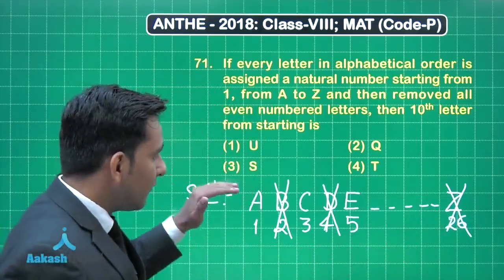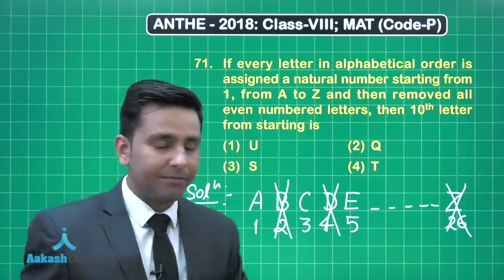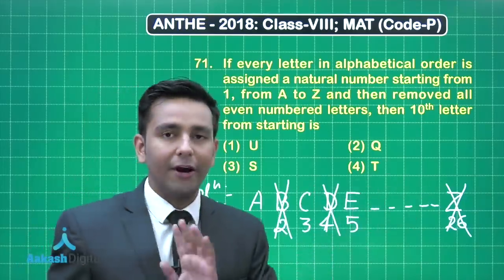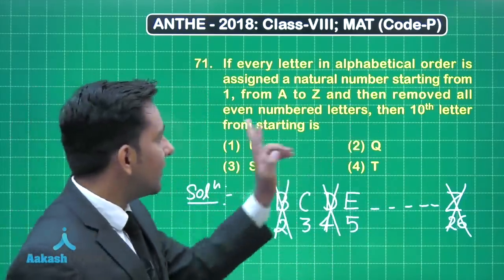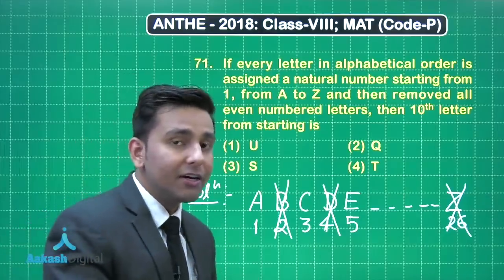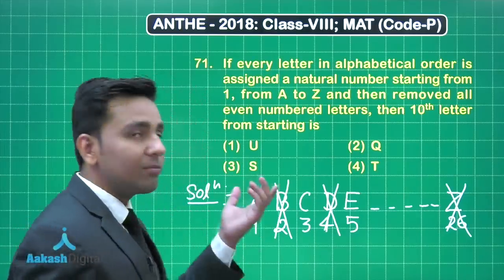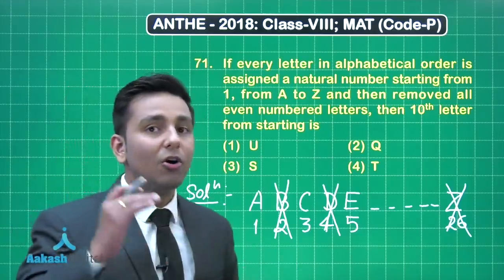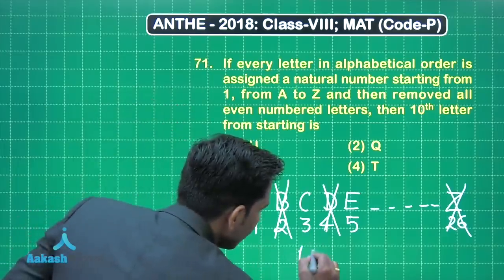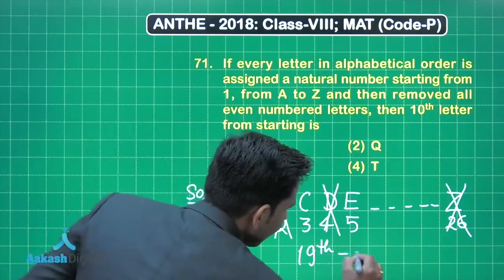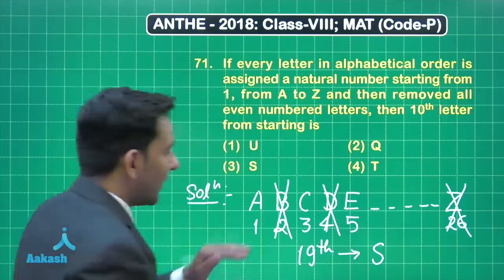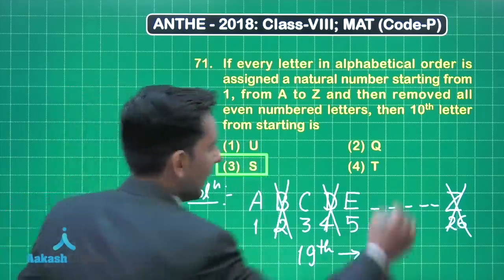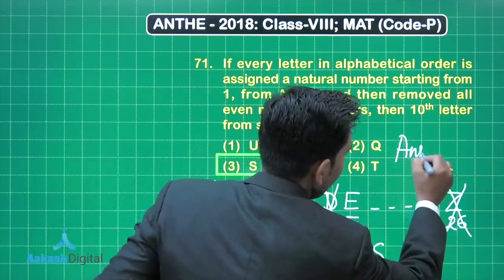Now we are left with the letters at odd places — that means A, C, E and up to Y. In this arrangement we have to find the tenth letter from the starting. The tenth letter from the starting will be the nineteenth letter of the English alphabet, because the tenth letter will be the tenth odd number. So it will be the nineteenth letter, and we know that the nineteenth letter in the English alphabet is S. So S is the correct answer — the answer for this question is option number 3.